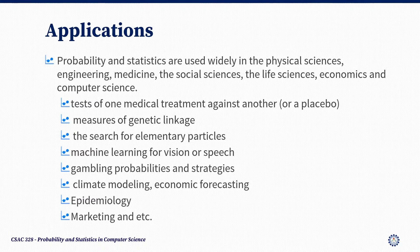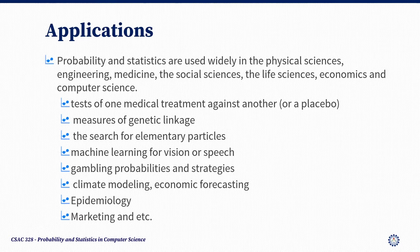Let's come now to applications, toy models, and simulation. Probability and statistics are used widely in the physical sciences, engineering, medicine, the social sciences, the life sciences, economics, and computer science. The list of applications is essentially endless: tests of one medical treatment against another, measures of genetic linkage, the search for elementary particles, machine learning for vision or speech, gambling probabilities and strategy, climate modeling, economic forecasting, epidemiology, marketing, and more.